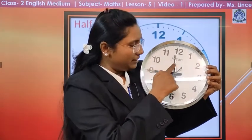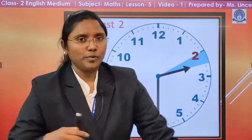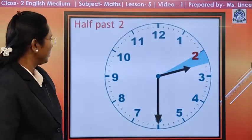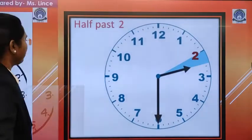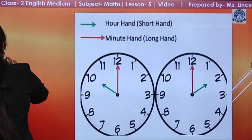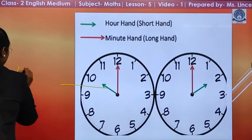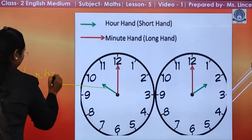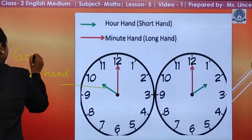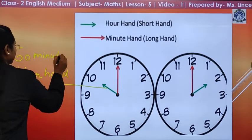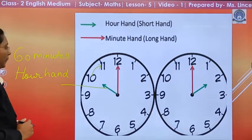Now, these 3 needles show us different times. See here, this is called hour hand. It takes 60 minutes to move from one number to another number.